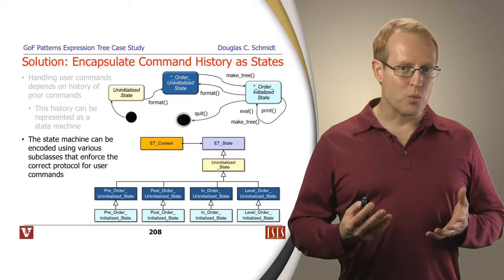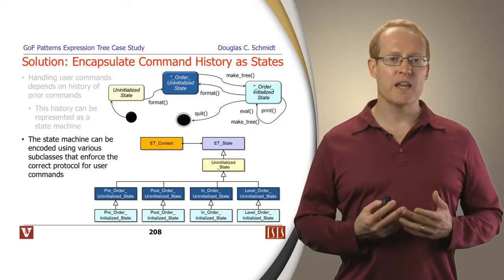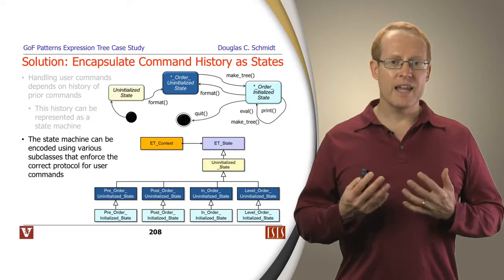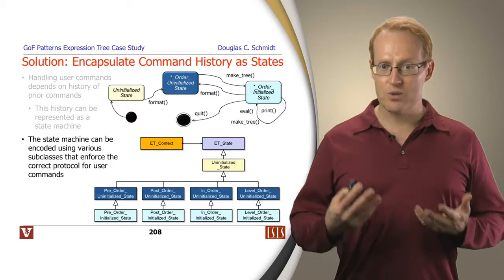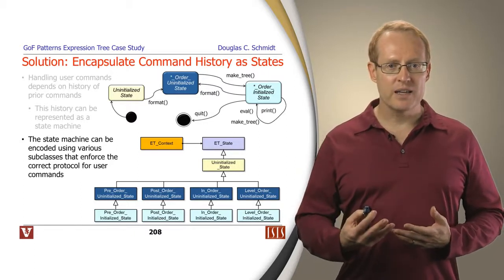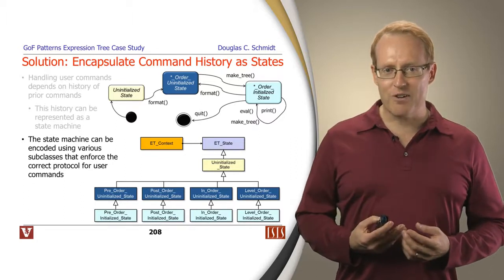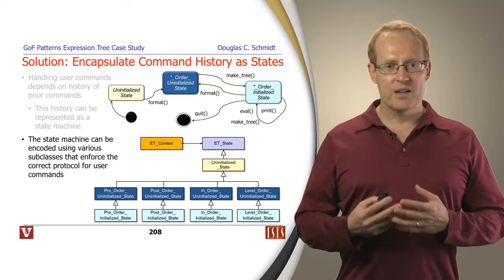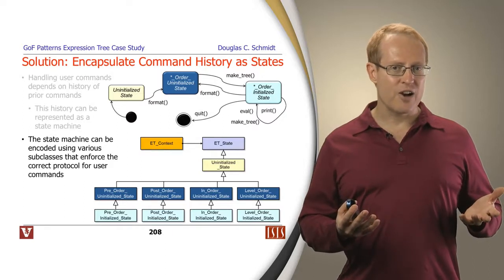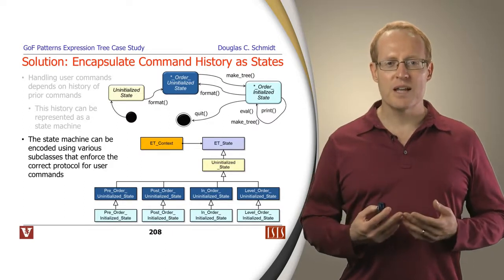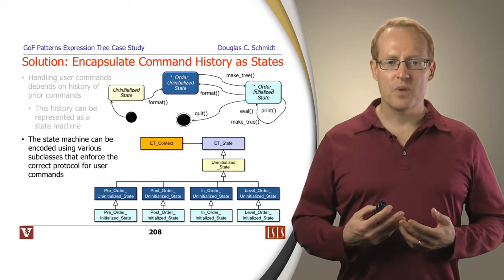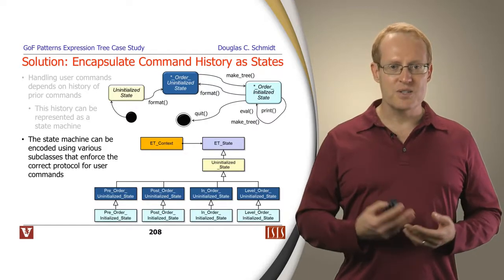If you try to invoke an operation that doesn't make sense based on the state that you're in, you'll get some kind of error or exception from the program. Now, the way in which the solution works is we take that state machine and then we bake that into the way in which the classes are structured. And we use inheritance and dynamic binding to make this all work effectively.